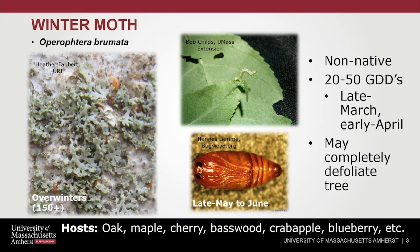Winter moth caterpillars may completely defoliate their host plants, though a tattered appearance and partial defoliation is typical. Caterpillar activity and feeding can occur until late May or early June, at which time caterpillars drop from their host plants to the ground to pupate. Winter moth is called winter moth because the adults emerge around Thanksgiving and are flying much later in the year — mating and laying eggs, with adults active until sometime in January depending on winter temperatures. Host plants include oak, maple, cherry, crabapple, blueberry, and others.